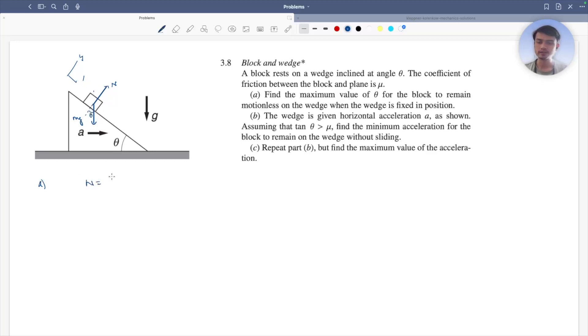So n is your mg cos theta. Now in the downward direction you have your mg sin theta equals to your frictional force that is mu times n. And if you divide the two equations, if you divide one and two.